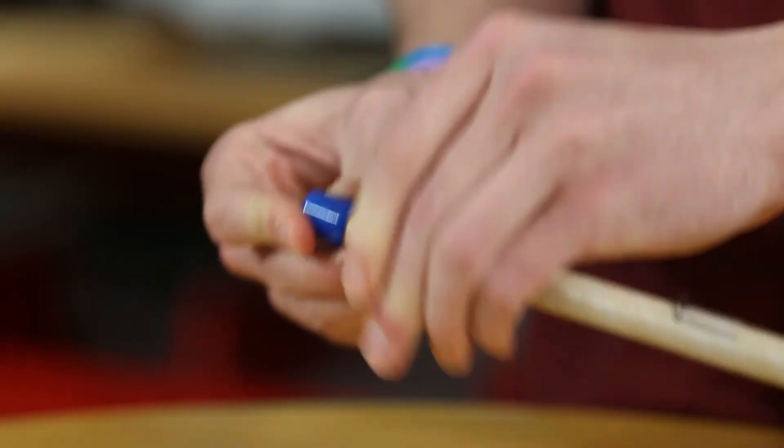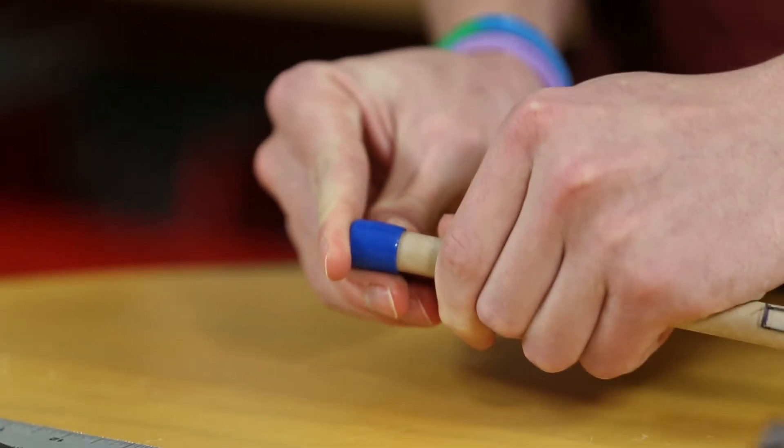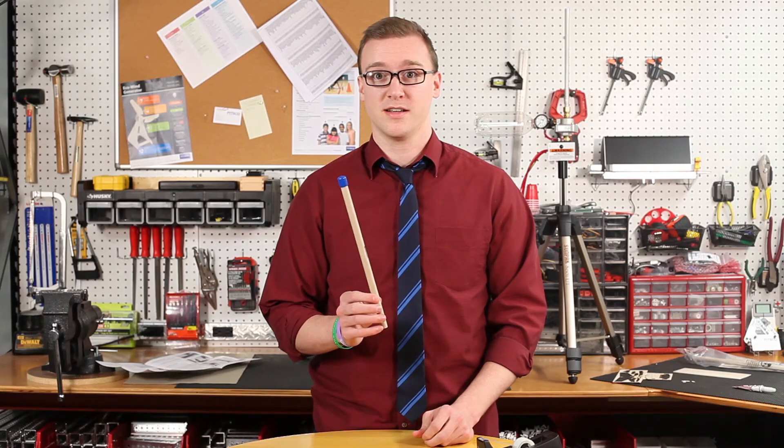Next, put the cap on the short end of the tube. And that's the construction of the rocket tube.